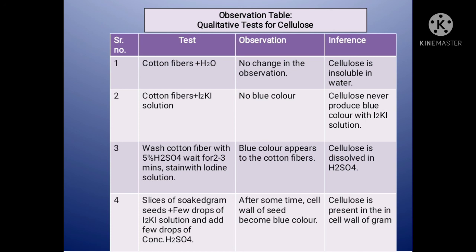Third test: wash the cotton fibers with 5% H2SO4, wait for 2–3 minutes, then stain with iodine solution. Blue color appears in the cotton fiber; the cellulose is dissolved in H2SO4. Fourth test: slices of soaked gram seeds plus a few drops of I2K solution, and add a few drops of concentrated H2SO4.